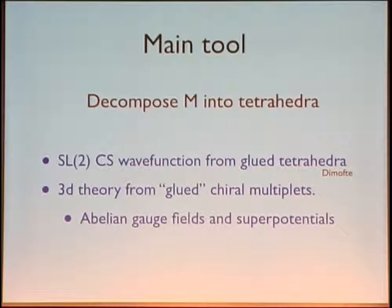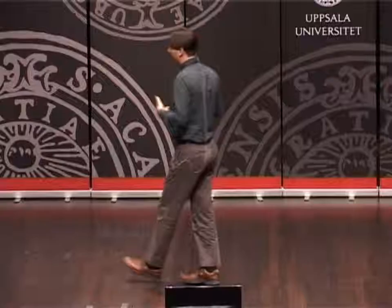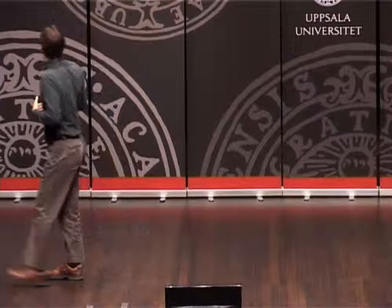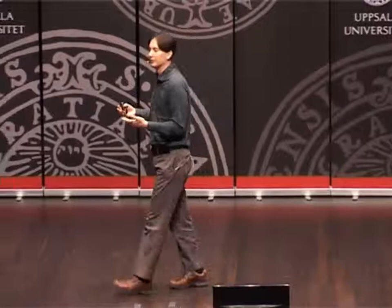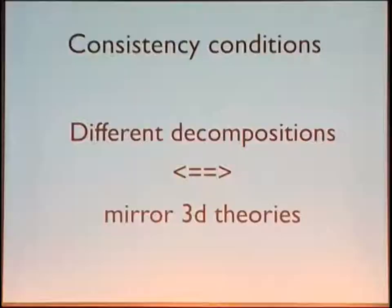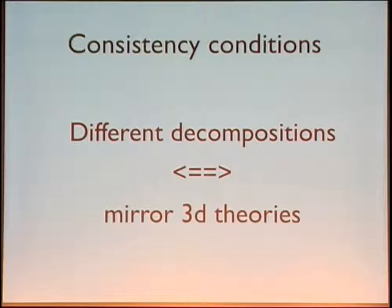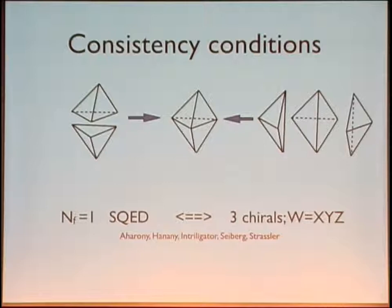In the second part of the talk, I'll try to give a more explicit description of how this gluing of tetrahedra works. The basic idea is that you look at the construction of the partition function from tetrahedra, you associate to each tetrahedron a chiral multiplet — more precisely the theory T-delta that Sergei described — and then you do the gluing by adding abelian gauge fields and appropriate superpotentials. Different decompositions of the same manifold into tetrahedra give you a different construction and a completely different looking Lagrangian.